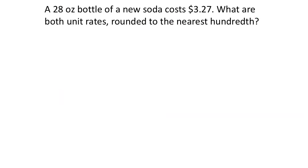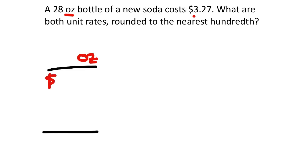A 28 oz bottle of a new soda costs $3.27. What are both unit rates rounded to the nearest hundredth? We're comparing ounces and dollars, so we need two separate fractions: one with ounces in the numerator and dollars in the denominator, and one with dollars in the numerator and ounces in the denominator. We have 28 ounces for $3.27.